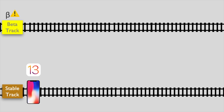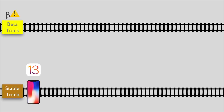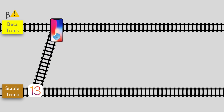Beta software is pre-release software that is still undergoing testing and has not yet been officially released to the general public. In Apple's own words, Apple releases developer and public betas for test driving pre-release versions. It can be installed on your phone by installing the beta profile. When you install the beta profile, your device moves to the beta track and you start receiving beta over-the-air updates, numbered as beta 1, beta 2, and so on.